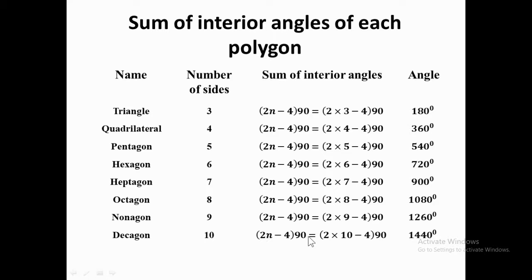If you want to find each interior angle, divide by the number of sides. For the triangle: 180 ÷ 3 = 60 degrees. For the quadrilateral: 360 ÷ 4 = 90 degrees — which is the interior angle of a square. You can do the same for the rest to find the value of each interior angle of any polygon.